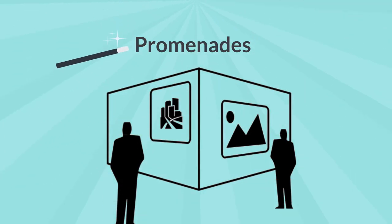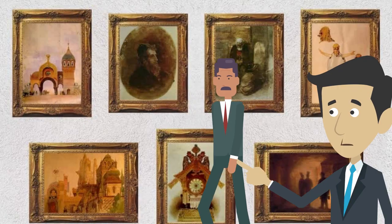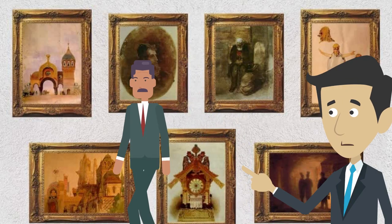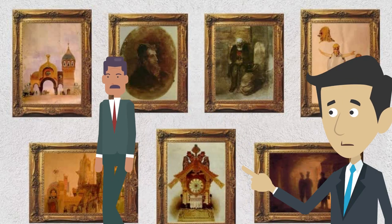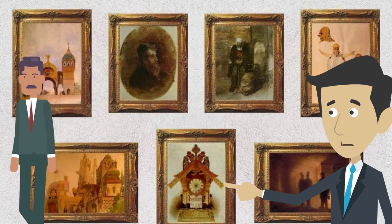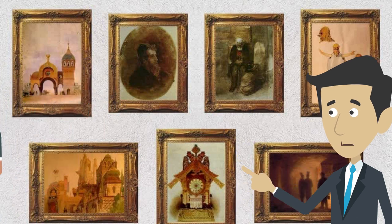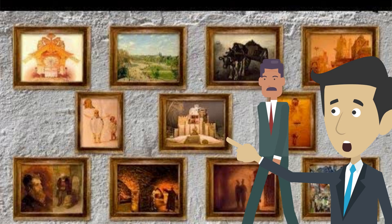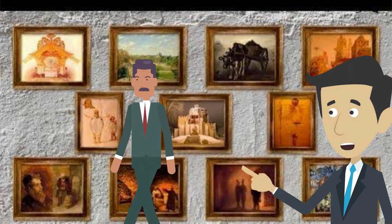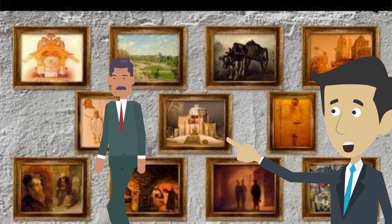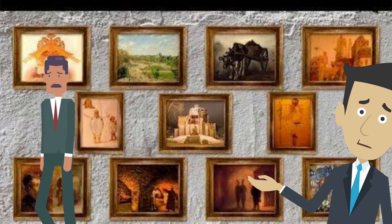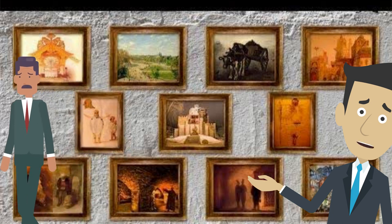Promenades. The curator offered soft comments: in this work, Mussorgsky described himself as traveling in the exhibition — now very leisurely, now briskly in order to come close to a picture that attracted his attention, sometimes sadly thinking of his dead artist friend.